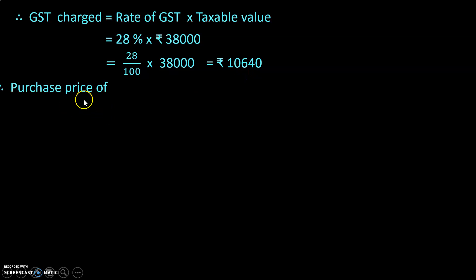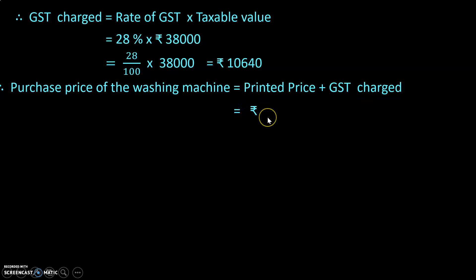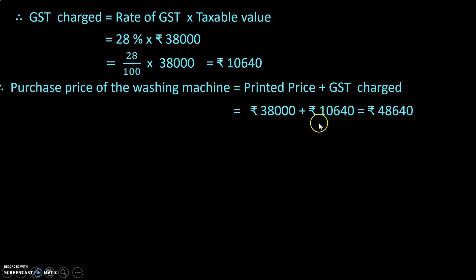The purchase price of the washing machine equals the discounted price plus the GST charged. The discounted price is ₹38,000, and GST is ₹10,640. Adding these two: ₹38,000 plus ₹10,640 equals ₹48,640. Hope this part is clear — you are going to pay ₹48,640.